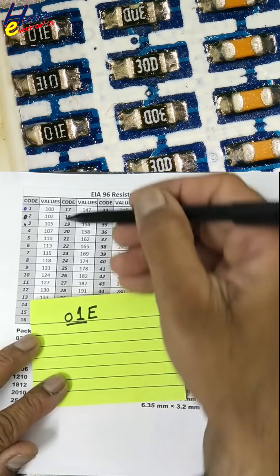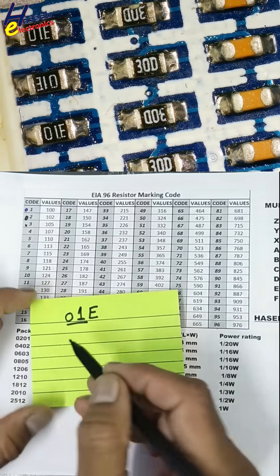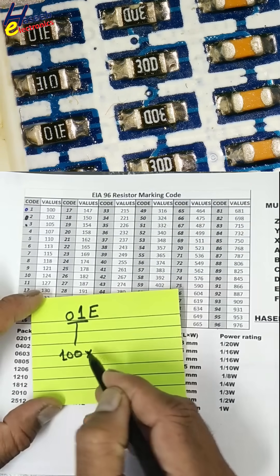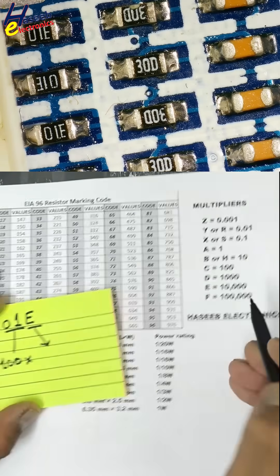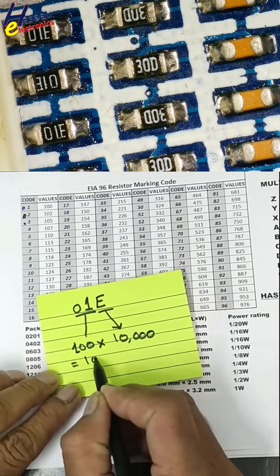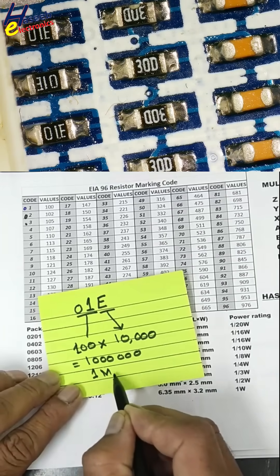01. For 01, we will find the base number. That is 100. We will multiply with the multiplier. That is E. Value of E is 10,000. That means 1 megaohm.